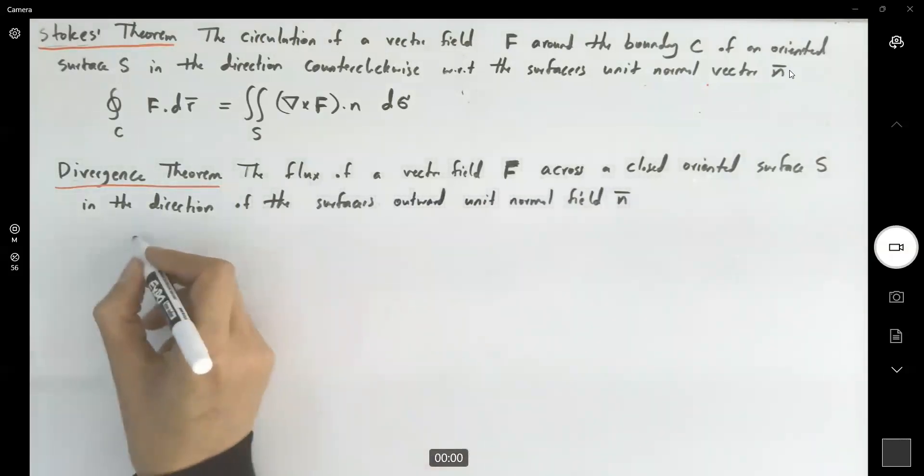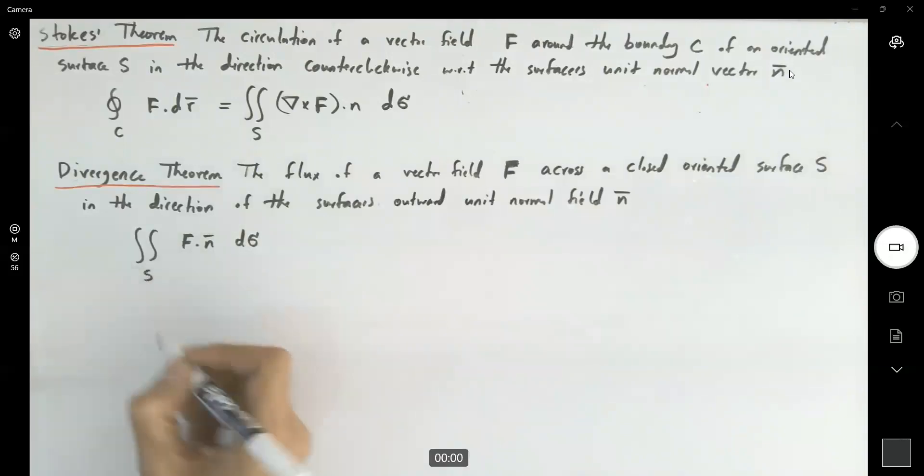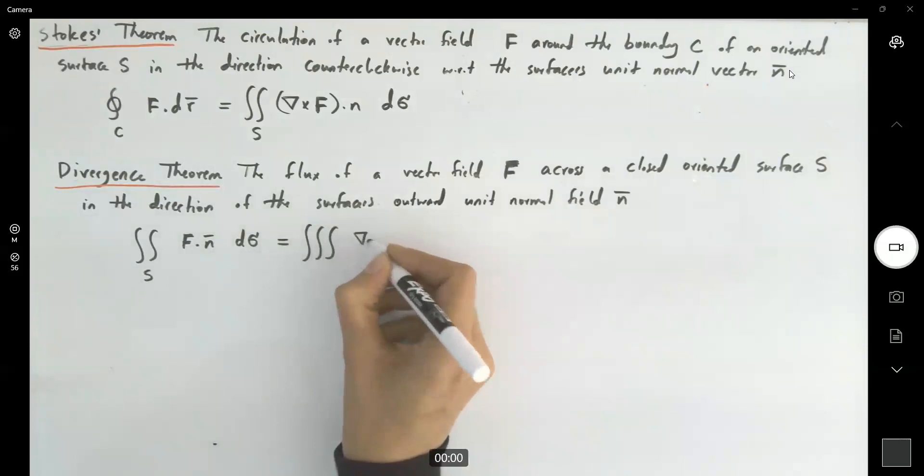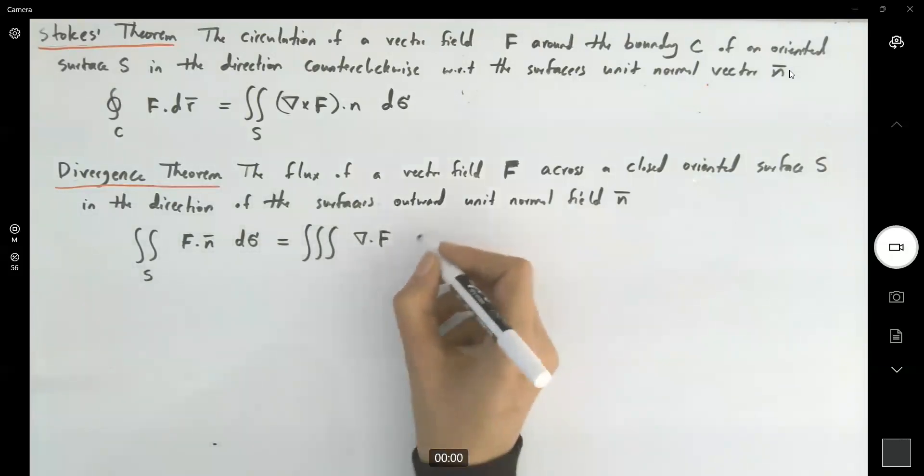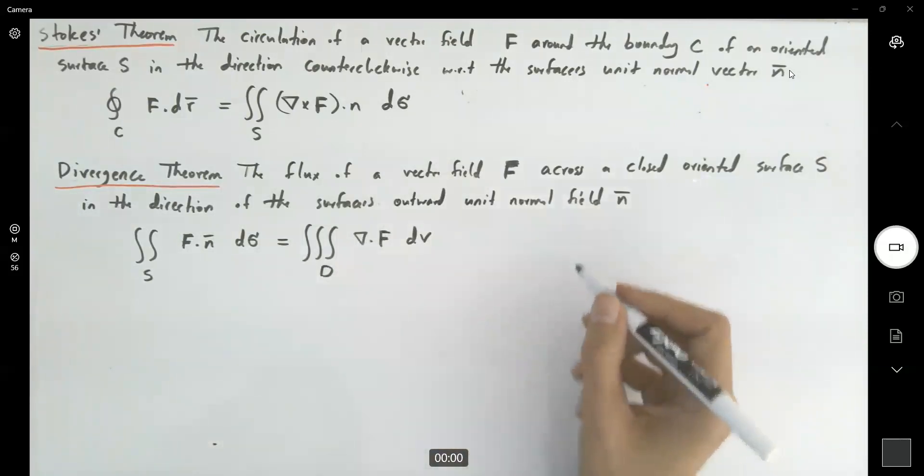Let's define this. So you have the double integral, f dot n, ds, dsigma, which is your outward flux, is equal to the triple integral. So, nabla dot f, you have the divergence, dv over d. D is the region enclosed by the surface.